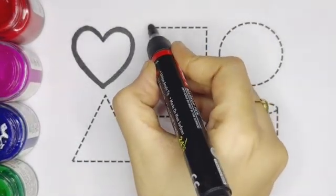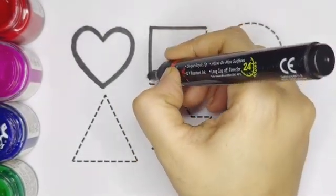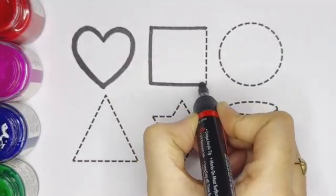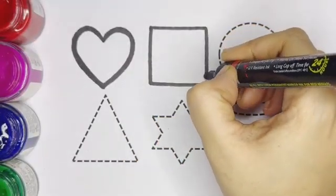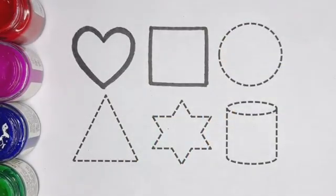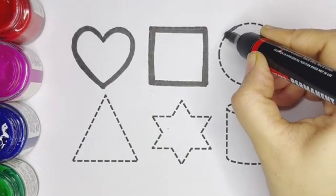Square. Kids, this is square. Square have 4 corners and 4 sides.